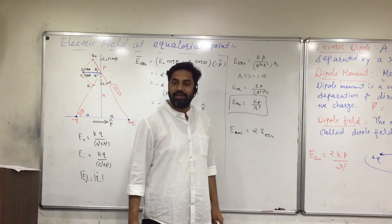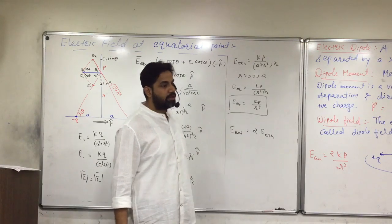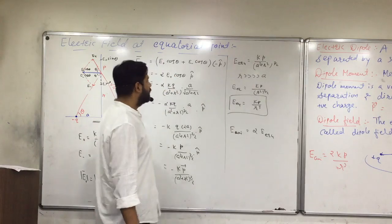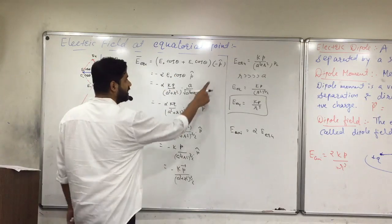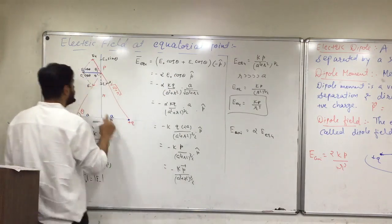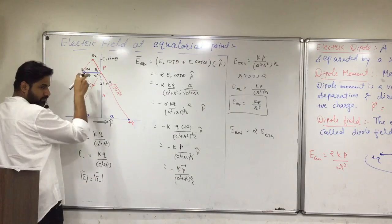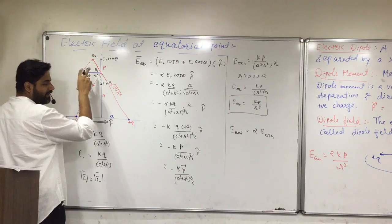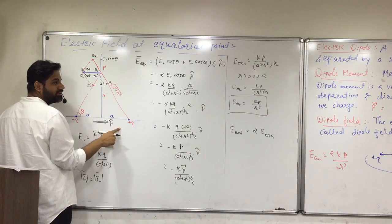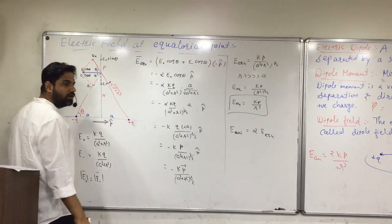Based on this, examples will come. The direction of E equatorial is minus p-hat, which is very simple. This is the direction we have got. P's direction is this way, so E equatorial is in the minus p direction. Clear?